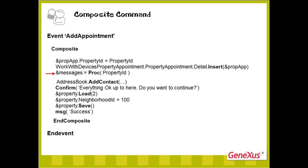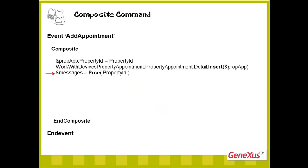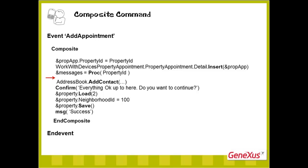If in the procedure we specify as the output parameter a variable of the message data type, the predefined STT — which, as we saw, is what a business component automatically returns when we execute its getMessages method — and load it in the procedure with the convenient error messages or warnings, this variable will be automatically inspected upon the return of the procedure's execution. In the case of an error, the execution stops and the messages are displayed on screen. Otherwise, the following invocation is executed, and so on.